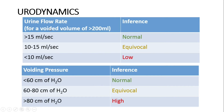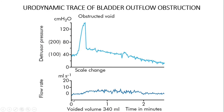In urodynamics, we look at urine flow rate and voiding pressure. The urine flow rate is measured for a voided volume greater than 200 ml. If the urine flow rate is greater than 15 ml per second, that is normal; if less than 10 ml per second, that is low. If the voiding pressure is less than 60 cm of water, that is normal; if greater than 80 cm of water, that is high. Low urine flow rate combined with high voiding pressure is the sign of bladder outlet obstruction.